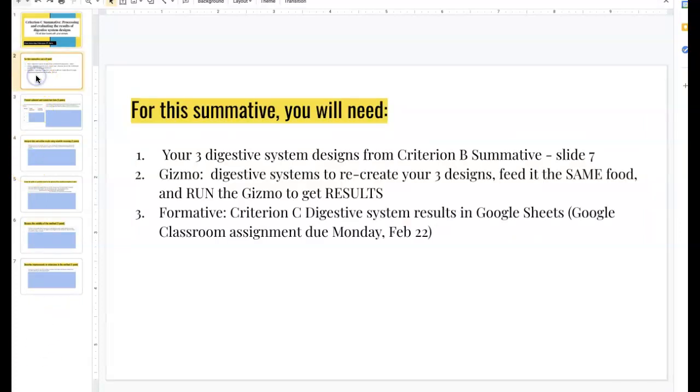The things that you need for this summative are your three digestive system designs from Criterion B Summative, slide 7, the Gizmo Digestive System so that you can recreate your three designs, feed it the same food, and run the Gizmo to get results. And then your formative, which is the Google Sheets where you created the double bar graph to record your results on your Criterion C Digestive System designs.